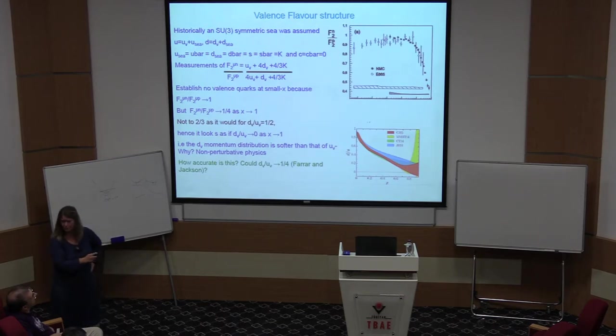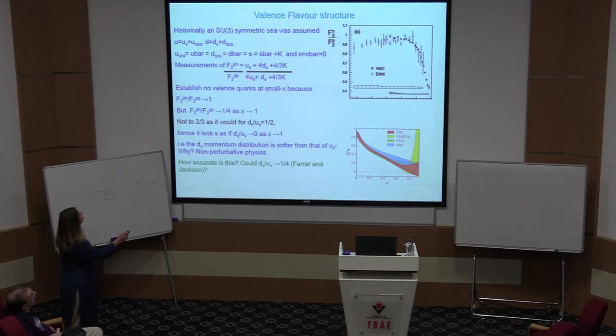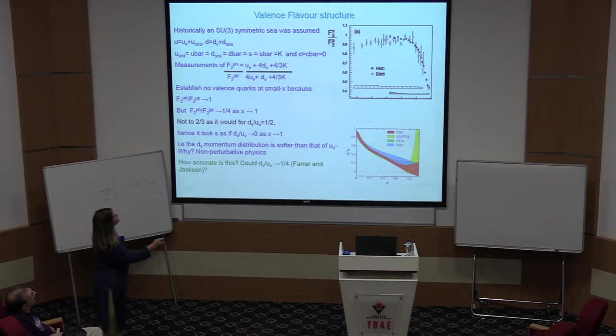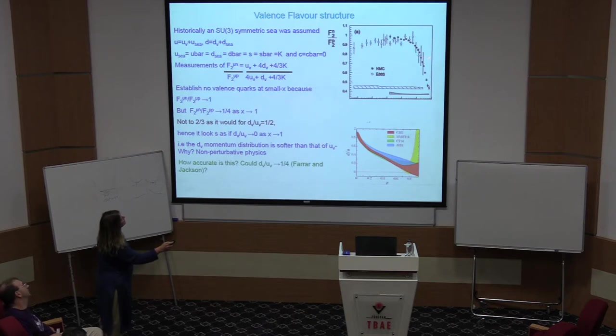Now look at the other end. If we take it up to 1 and the C goes away, then if you actually believe that there's 2 U valence and 1 D valence and you plug that in with no C, you would get 2 thirds for this ratio. But it doesn't go to 2 thirds, does it? Look at it here. It's way below 2 thirds. In fact, it seems to be heading for about a quarter, perhaps. A quarter would be what you would got if there was no D valence quark at all.